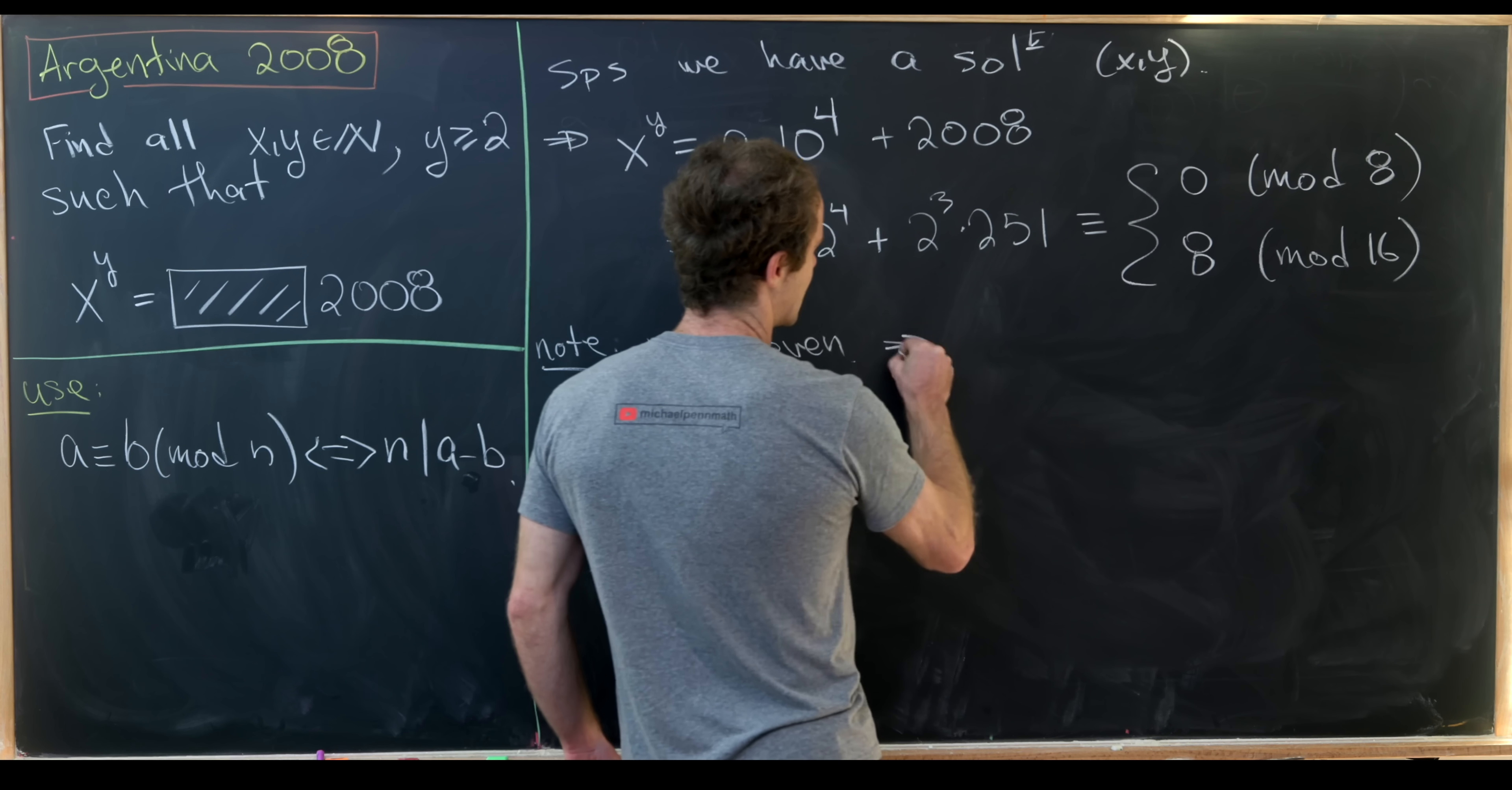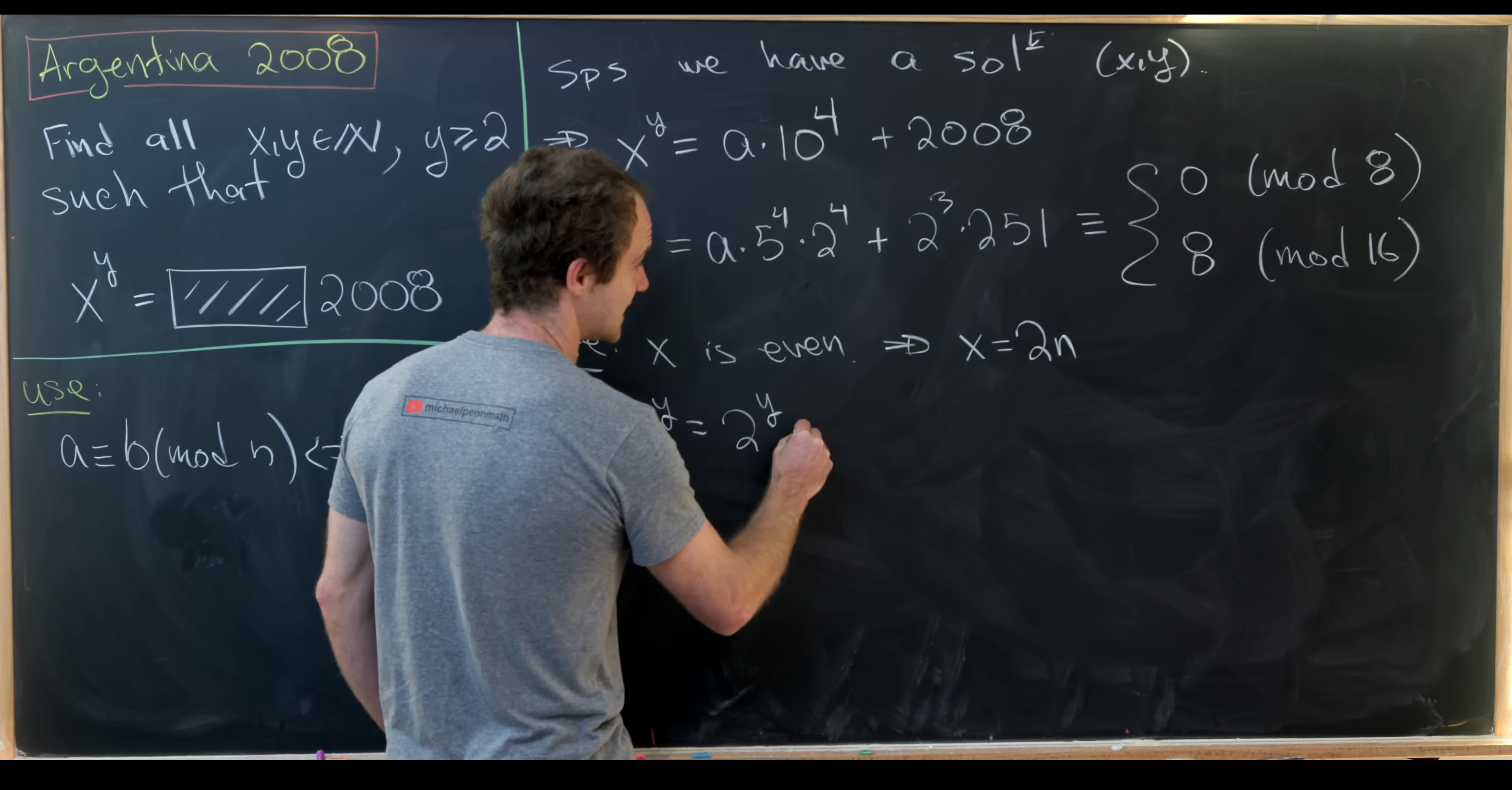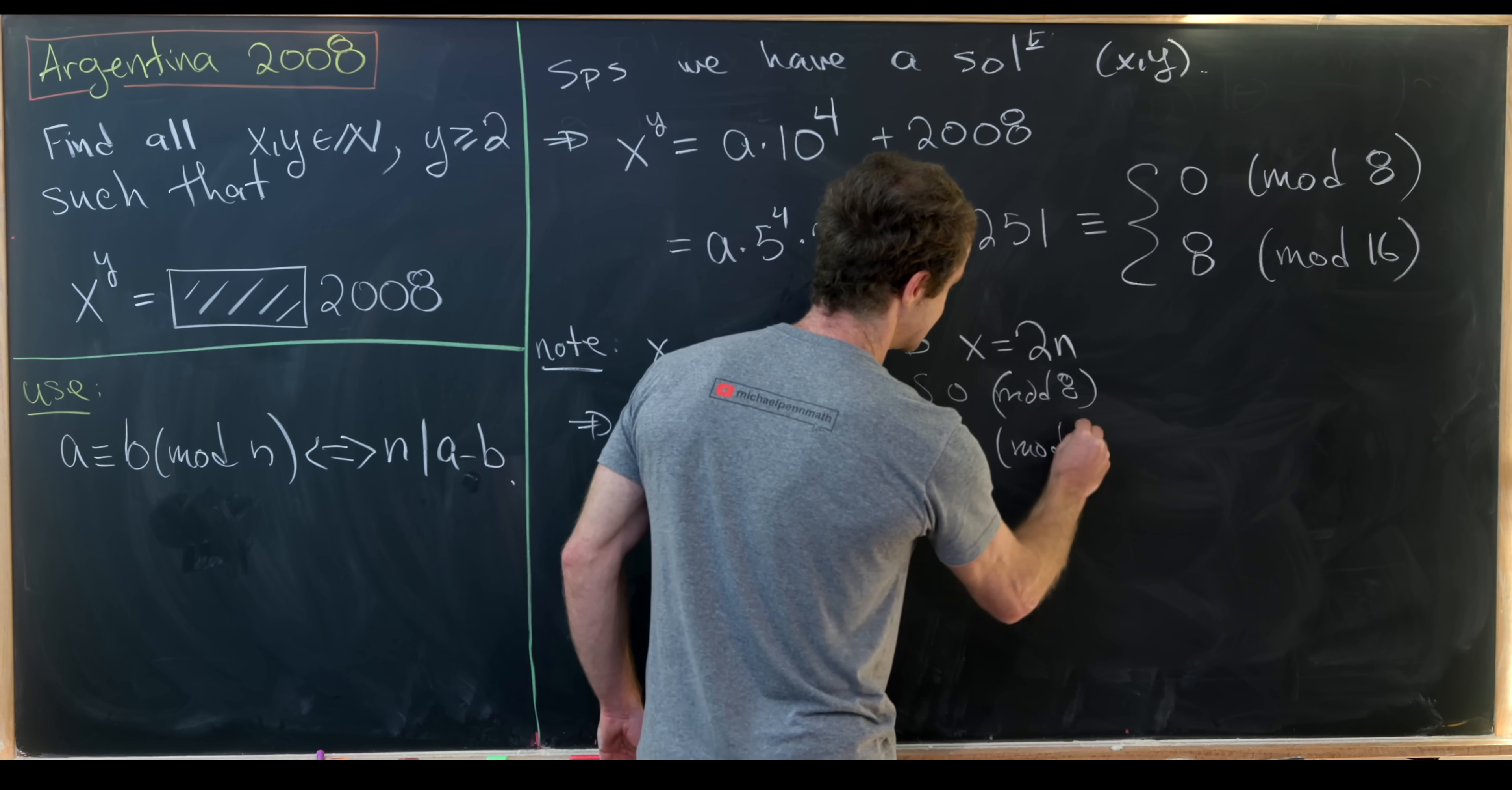So now that means we can take x to be equal to 2n and see what that does for us. So we have x to the y is the same thing as 2 to the y times n to the y. And like we had before, that has to be 0 mod 8 but 8 mod 16.